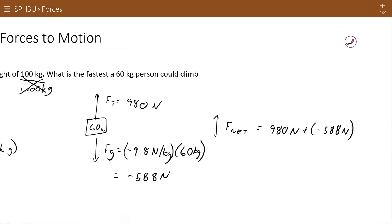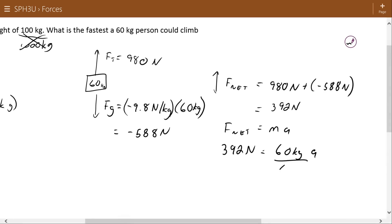That means that the net force, F_net, is going to be 980 newtons plus the negative 588 newtons, or 392 newtons, obviously up. Now F_net equals ma, so that 392 newtons is equal to 60 kilograms times a. Divide both sides by 60 and my acceleration is going to be equal to 392 divided by 60 - 6.533, sorry not negative, positive meters per second squared.